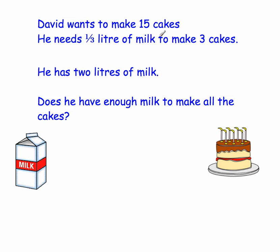First of all, I'd be considering how much milk he needs. He needs a third of a liter to make 3 cakes. Well, to get from 3 to the 15 he needs, you're going to need to times by 5. He needs 5 times as much — 5 times as much of all the ingredients.